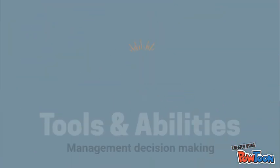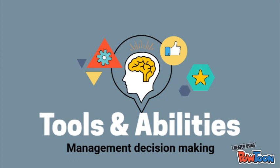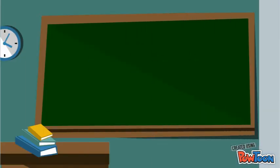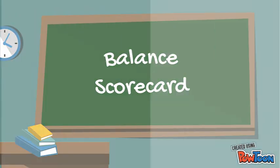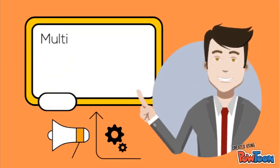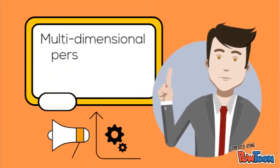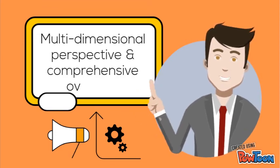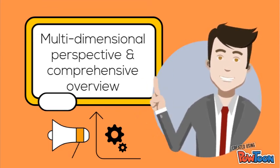Here are some tools or abilities that are helpful to management decision-making. First, the balanced scorecard — a report that provides a multidimensional perspective on organizational performance. It provides a more comprehensive overview of organizational performance than financial measures alone.